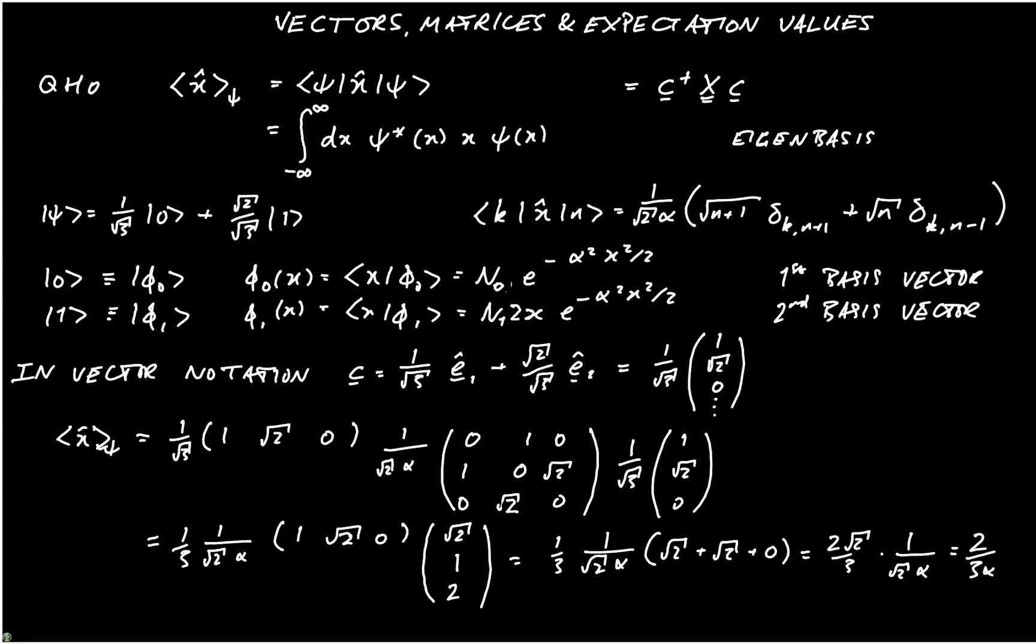Because the quantum harmonic oscillator has a ground state where n equals 0, it's probably quite confusing seeing the first basis function labeled as ket 0. If you want to use this notation of e1 and e2 for the basis vectors, that may help you.